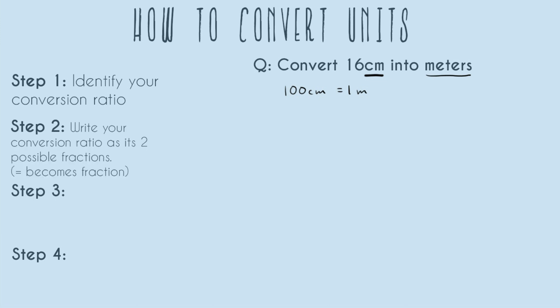Step two: write your conversion ratio as its two possible fractions. Your equal sign is now going to become your fraction bar. Our two possible options are 100 centimeters over one meter, and then our other option is one meter over 100 centimeters. I made both of them because I don't know which one I'm going to need yet. That equal sign turns into a fraction where either one could be on top — always make these two different fractions with both options.